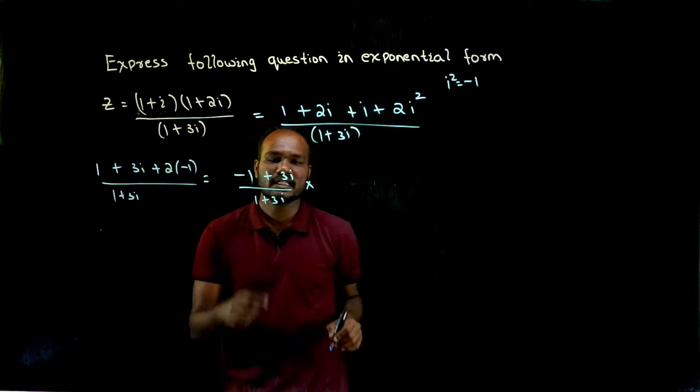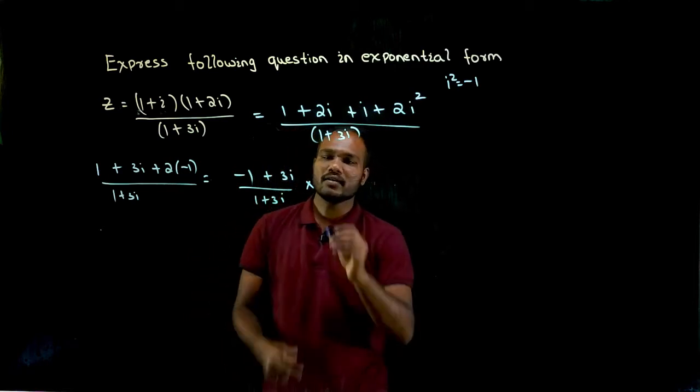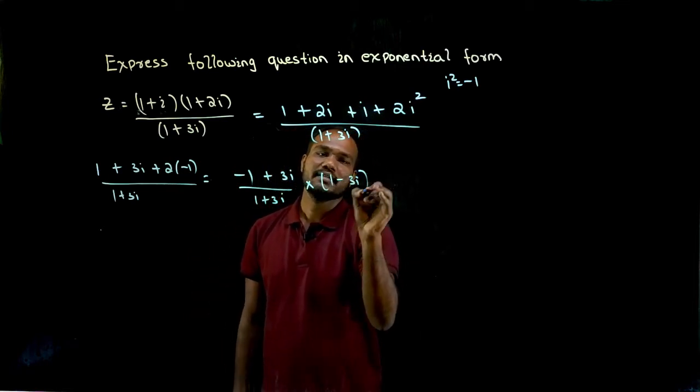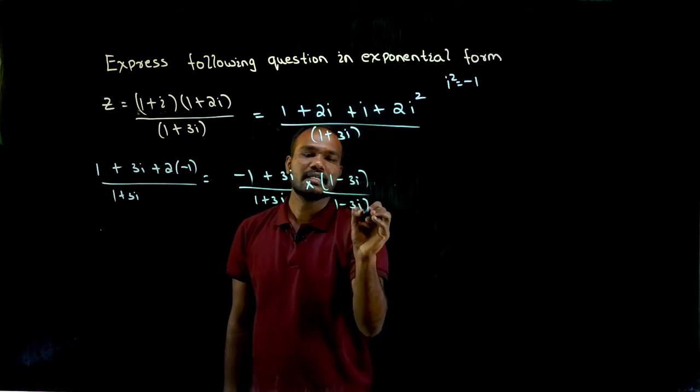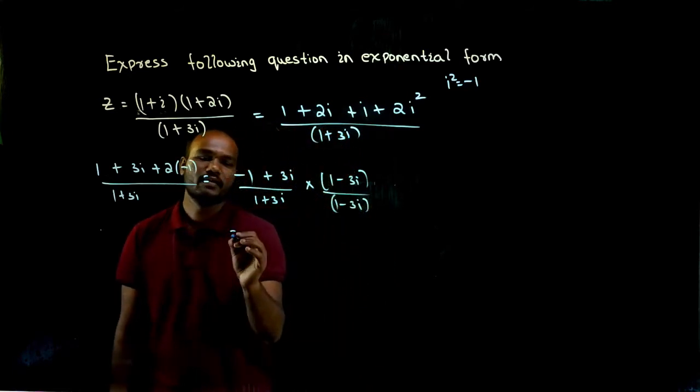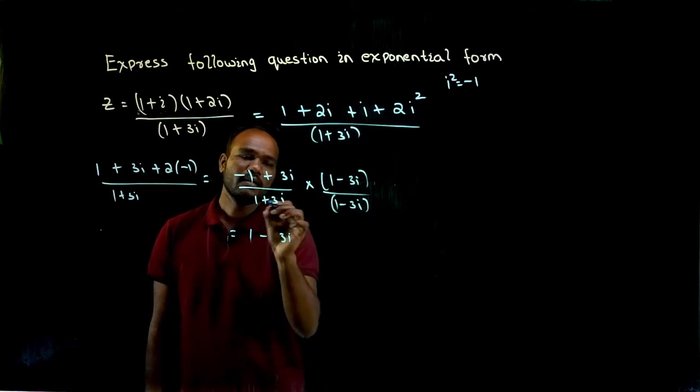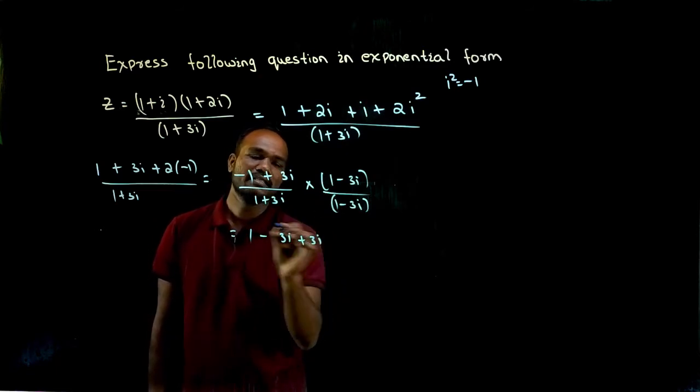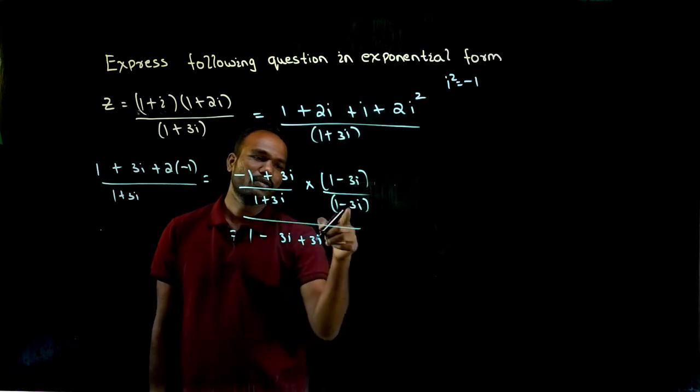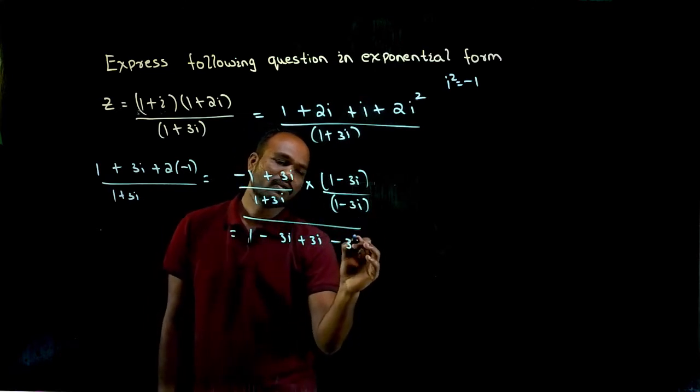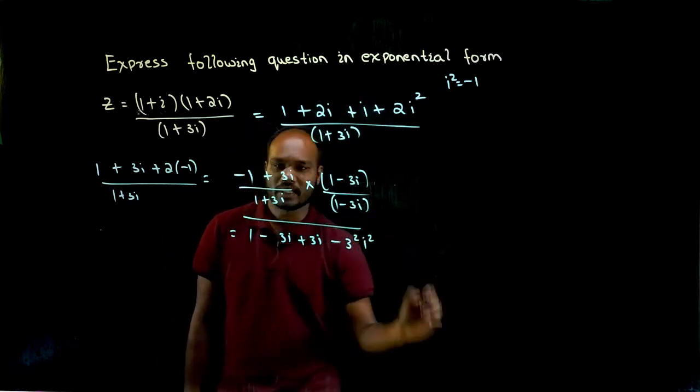So we have to multiply with the conjugate. In the denominator 1 plus 3i, conjugate is what? 1 minus 3i. In the numerator also 1 minus 3i. Again, we will multiply: 1 into 1 is 1, 1 into minus 3i is minus 3i, plus 3i into 1 is plus 3i in denominator. So plus into minus is minus, 3 into 3 is 3 square, i into i is i square.